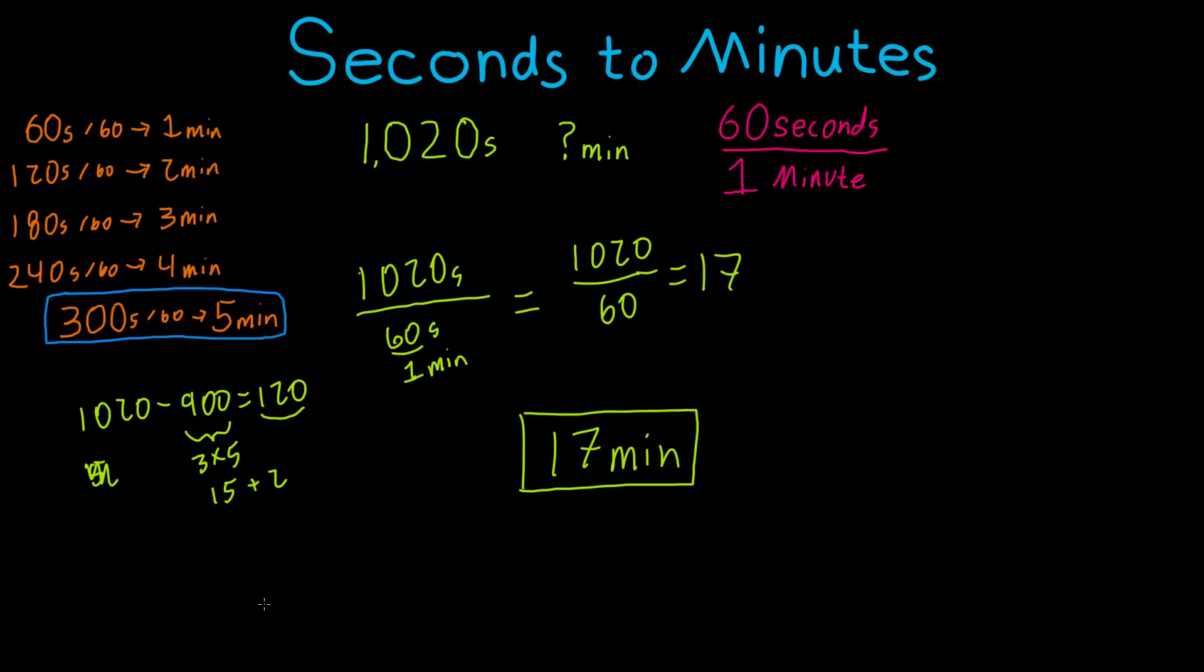It's okay if this is confusing. Depending on what level math you're at when you're learning this, this is a hard number to divide 1020 by 60. So it'll take a while. But with practice, you'll get it. That's the important part.